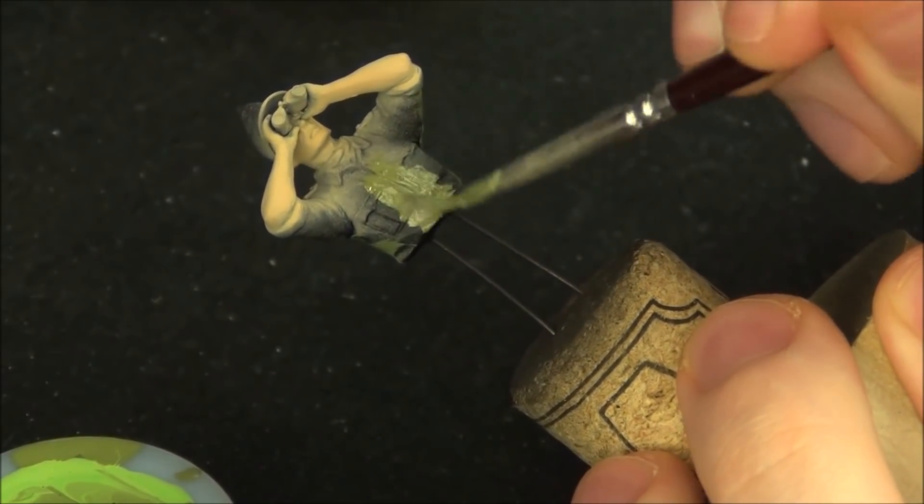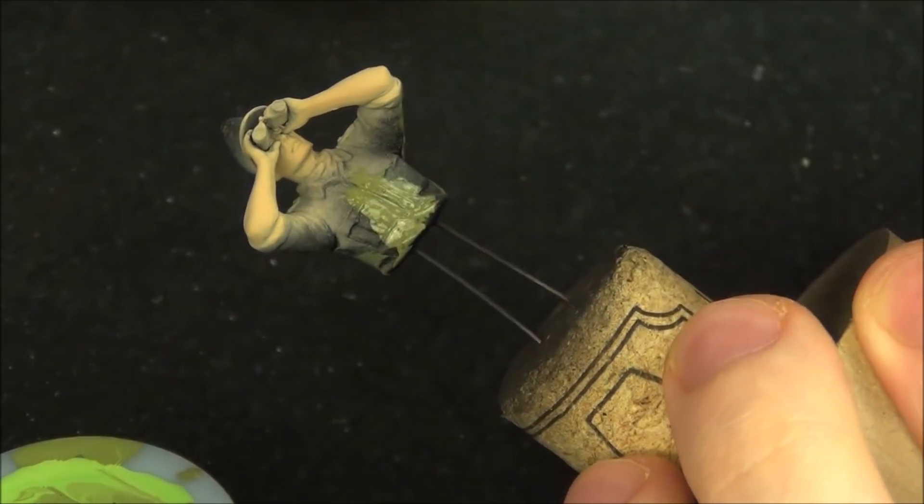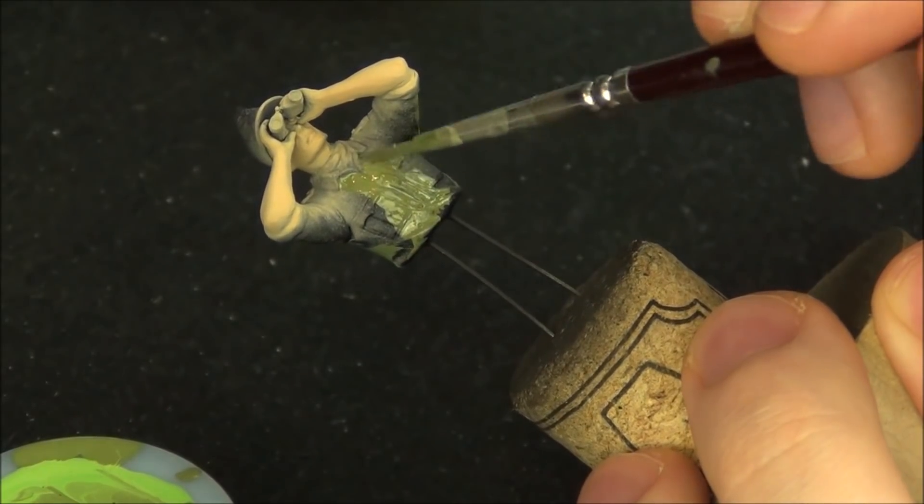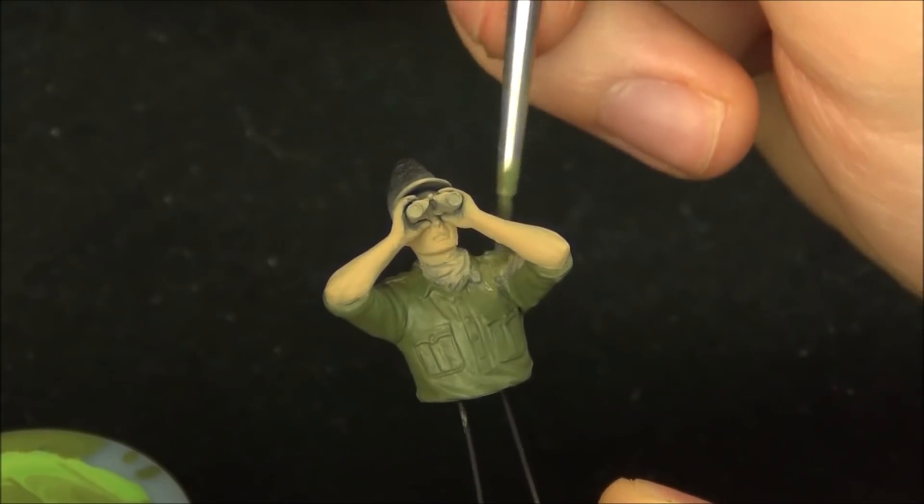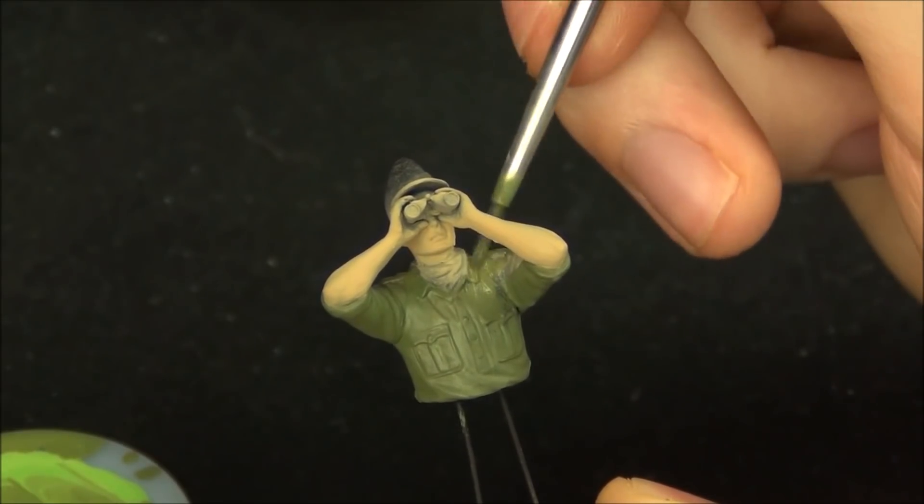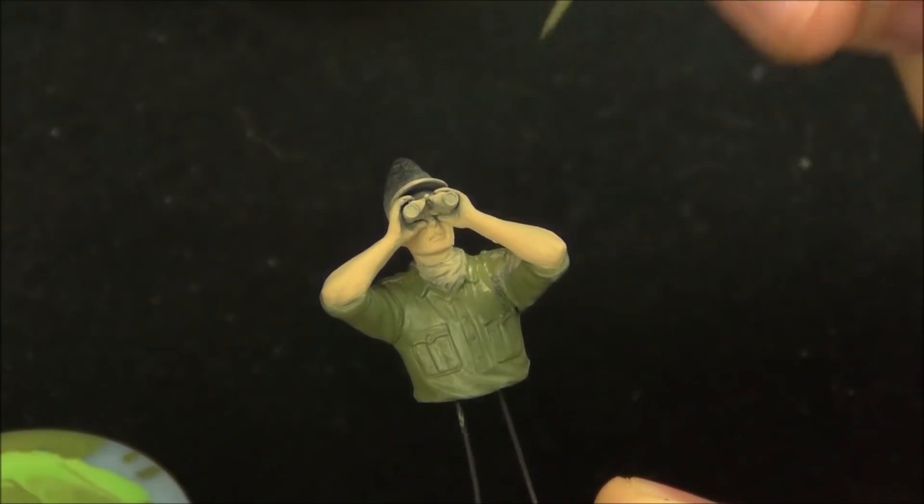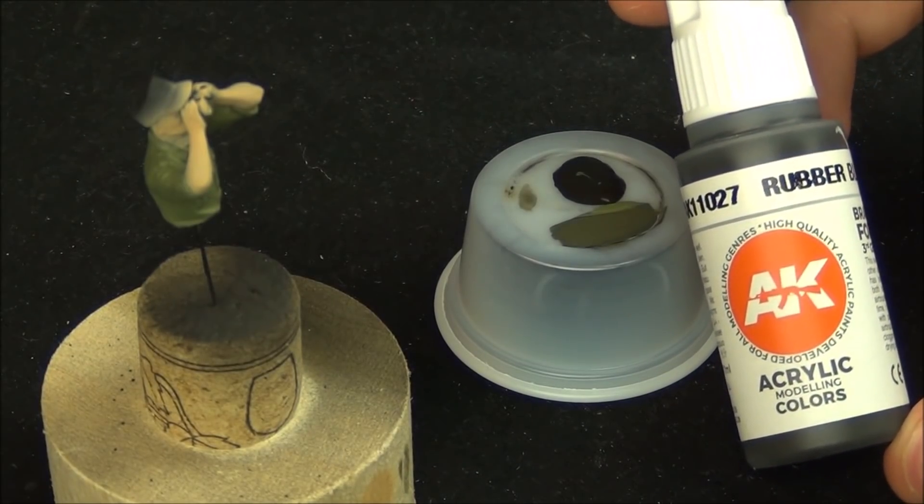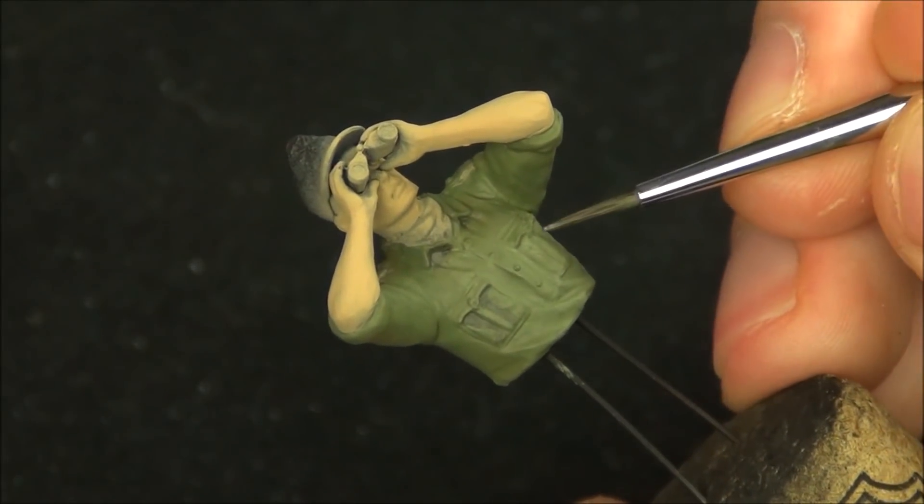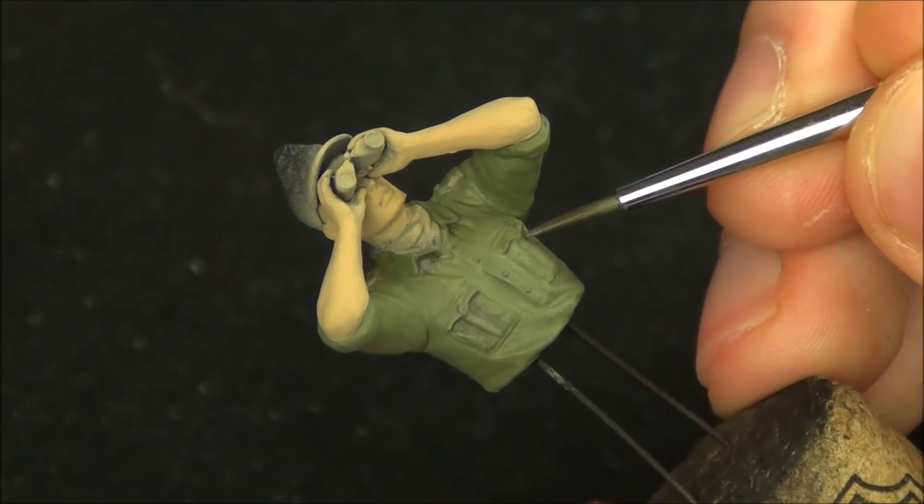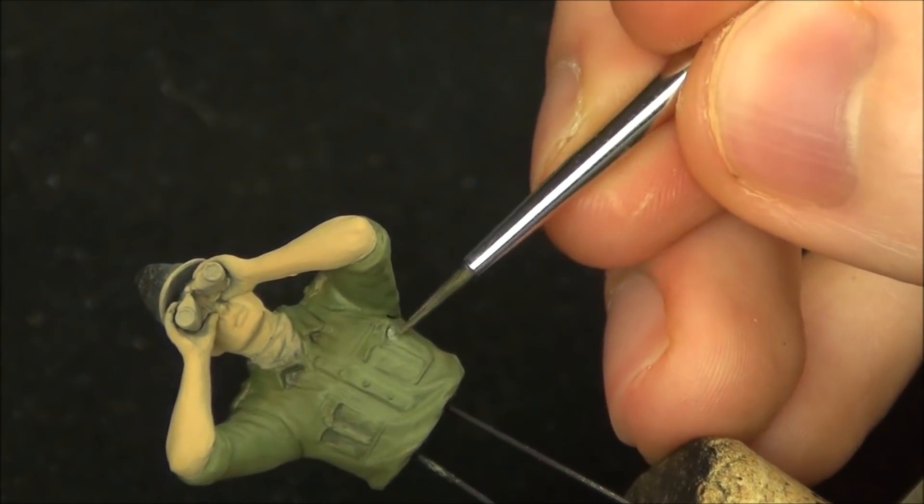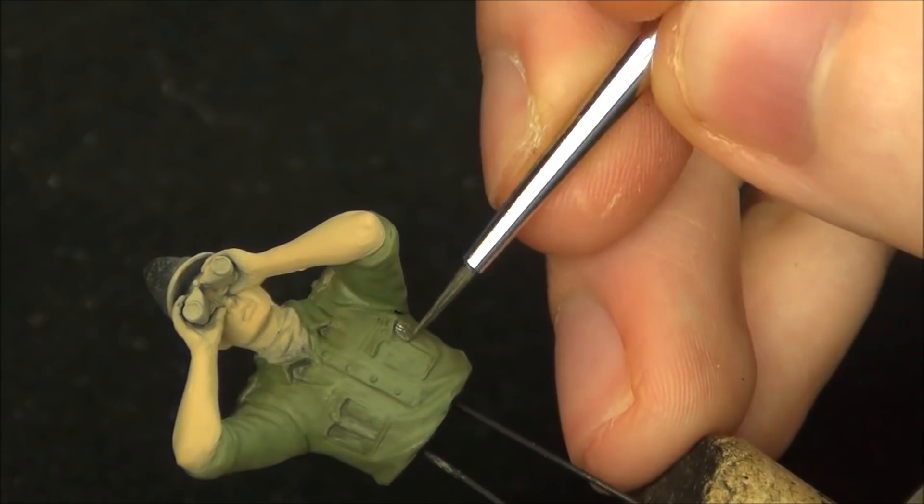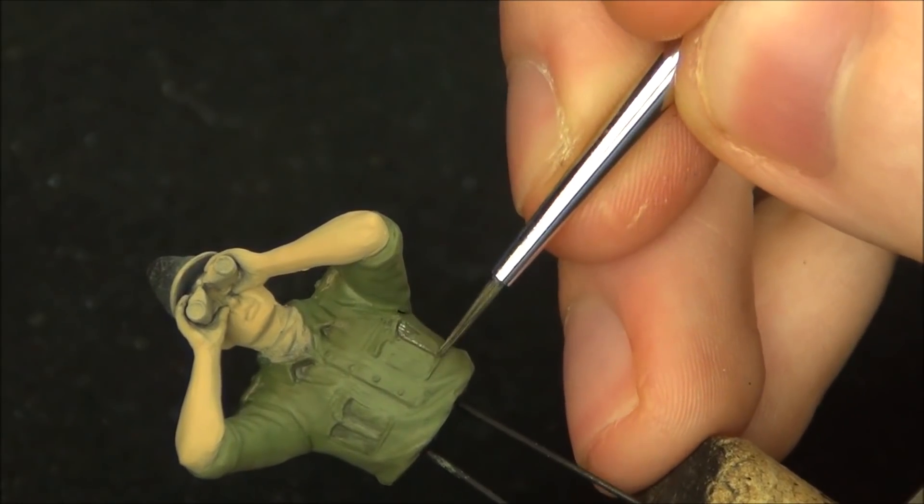These AK Gen 3 paints brush really well but they do require a little bit of thinning with water. Now I'm going to take some of this rubber black and I'm going to mix that with some of the previous green color so I get a darker color. This is going to be our shadow color which we're going to paint in all the areas where we want to emphasize the shadows.